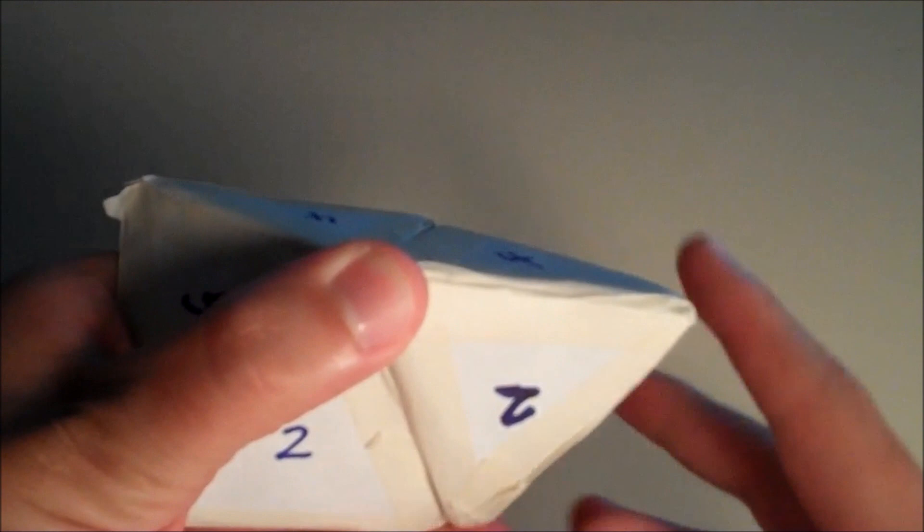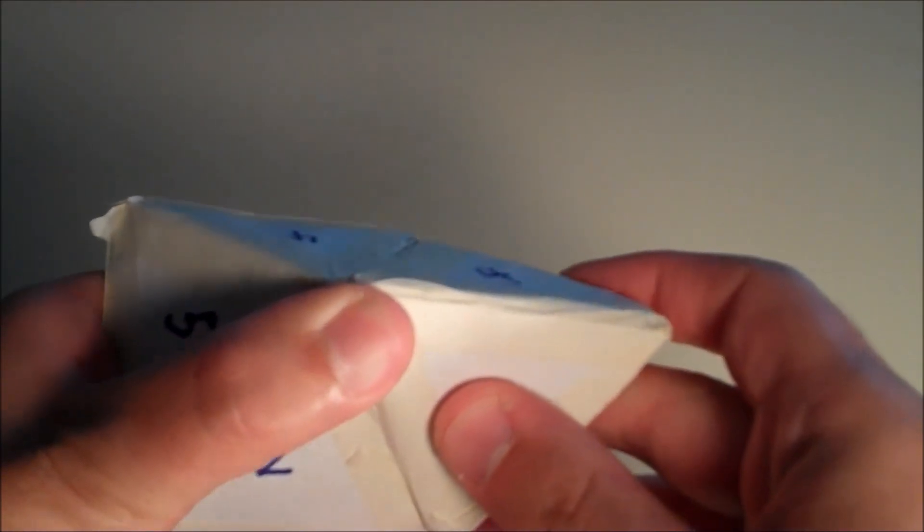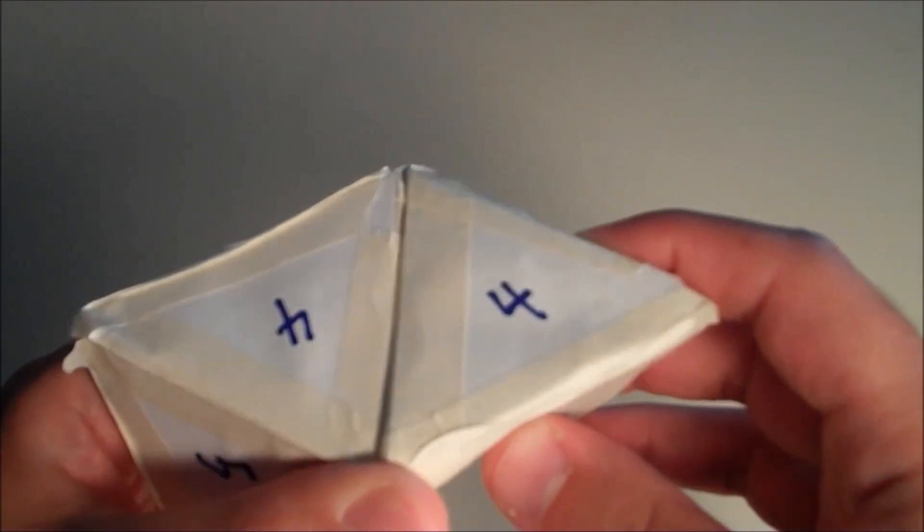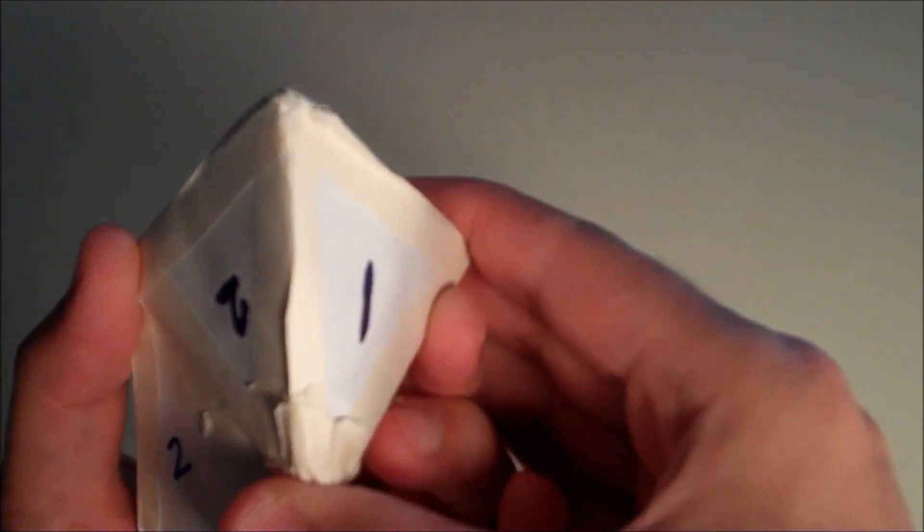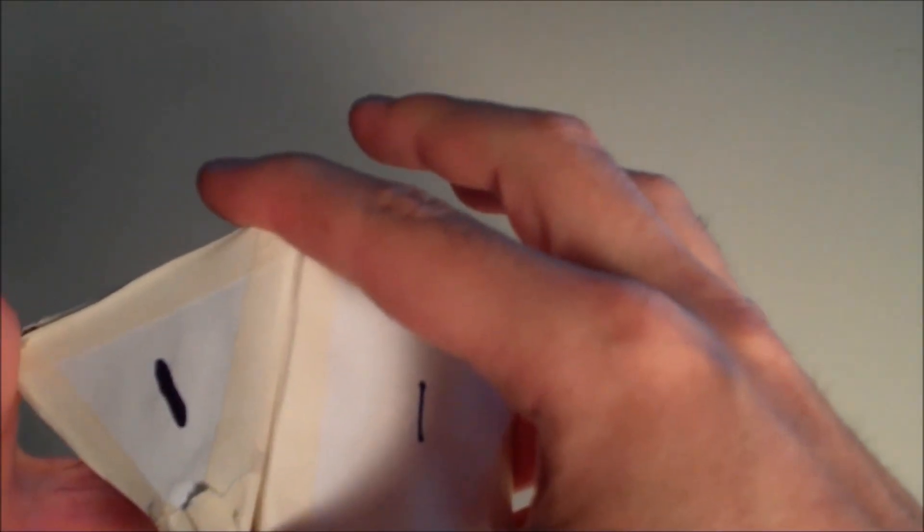The same thing happens with the side faces, which are numbered 4. They form a completely flat surface. And this is going to affect the number of exposed faces on our resulting solid.